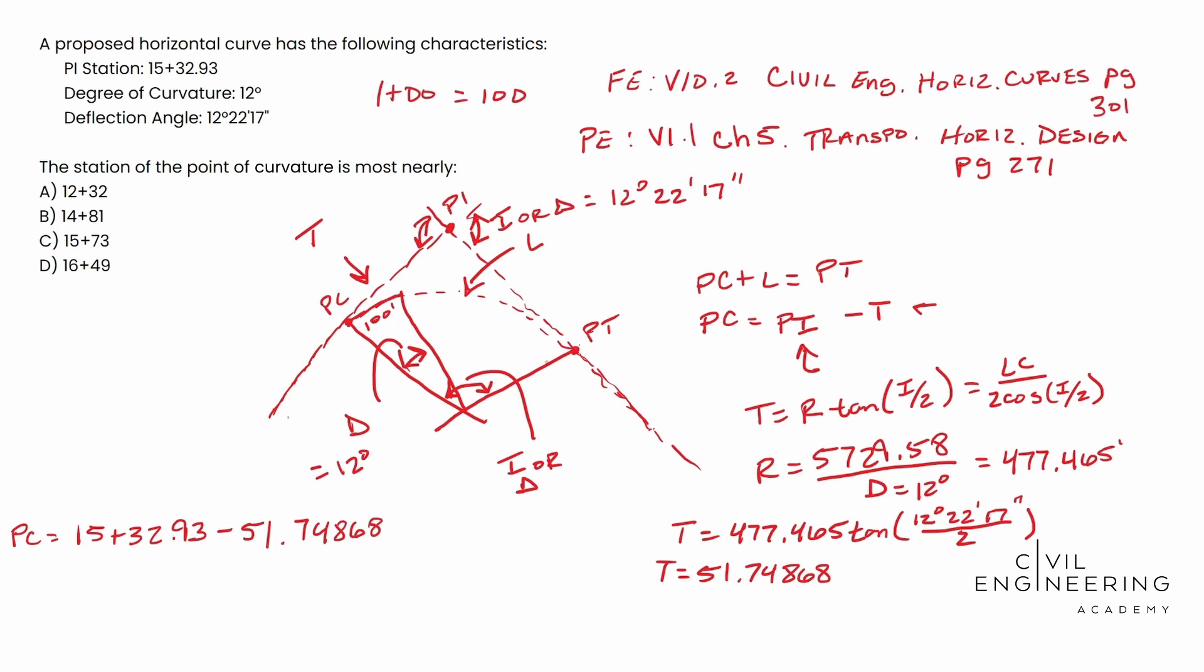Remember station is just a hundred foot. And so whenever you subtract these guys, you end up with 14 plus 81.18. So that's that. And if we're looking in our answer bank, it looks like B is going to be our most nearly answer. And so I hope this video helps and we'll catch you next time.